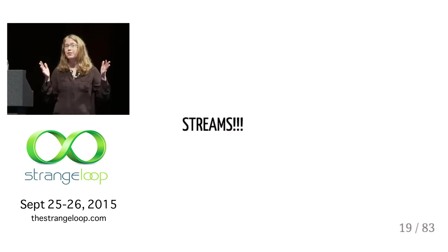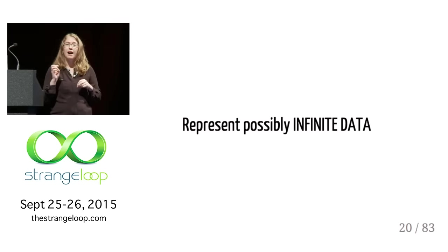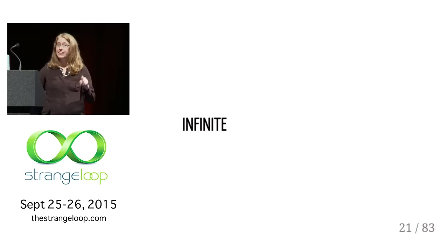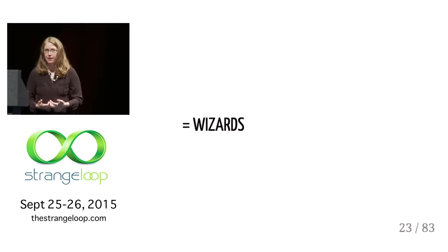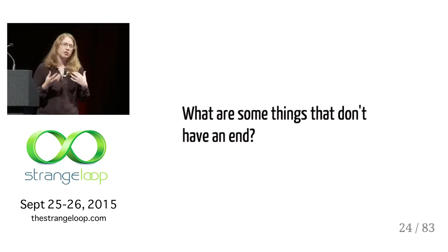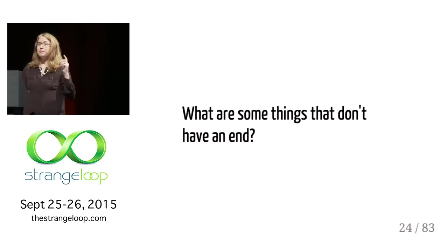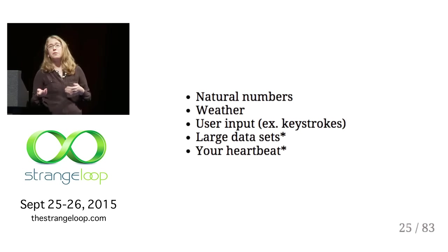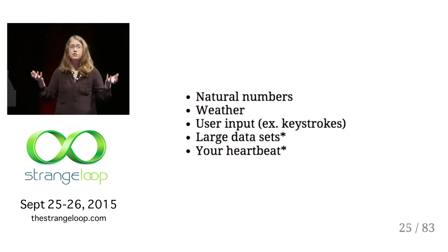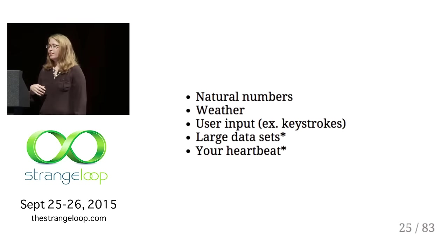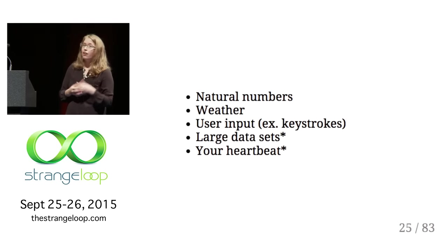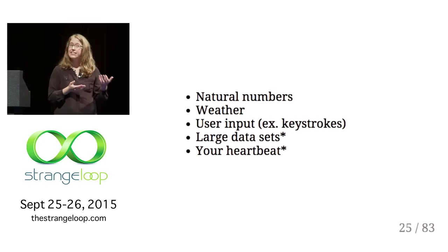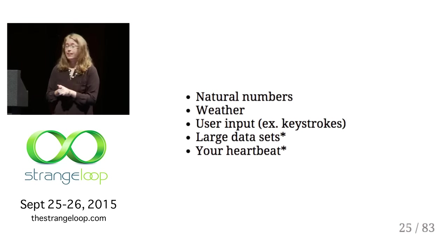Streams let you represent possibly infinite data — infinite data making you essentially a wizard. What are some things that don't have an end? We have natural numbers: there's no such thing as a terminal natural number, because any time we have any number we can always make a new one by adding one to it. User input and keystrokes — in JavaScript world, especially on the client side, we deal with this all the time. Large data sets and your heartbeat have stars because they definitely do have an end, but you just don't know when it is. Streams let you operate on that assumption.